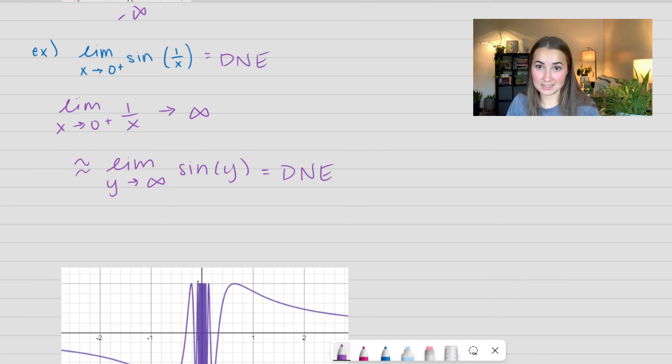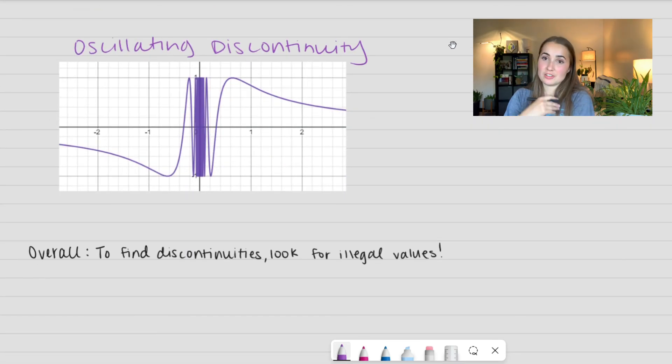This is called an oscillating discontinuity. I have a beautiful photo for us. And that's because we actually can't plug in the value of 0. So it's oscillating really, really close around 0 and it's going absolutely crazy that we can't actually take the limit of it because it never lands on the numbers. So this is an oscillating discontinuity.